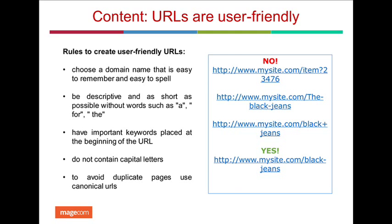Meaningful, keyword-based URLs are good for both visitors and search engines. In order to perform effective URL optimization, you need to approach it as a copywriter — please do not perform any changes without consulting a specialist in this area. The following rules may apply: choose a domain name that is easy to remember and spell; be as descriptive and as short as possible without filler words; place important keywords at the beginning of the URL; do not use capital letters; and to avoid duplicate pages, use canonical URLs.